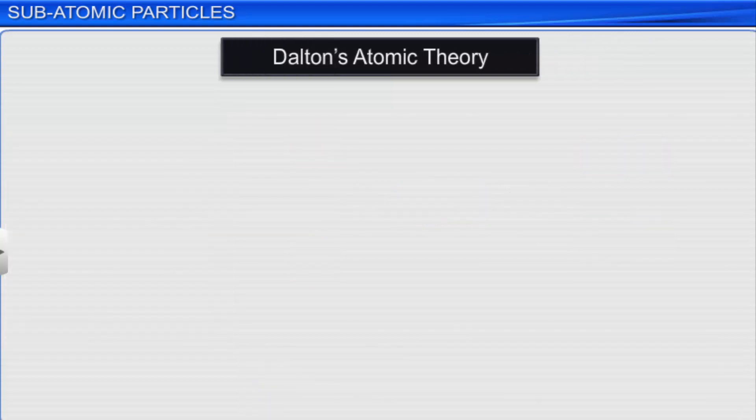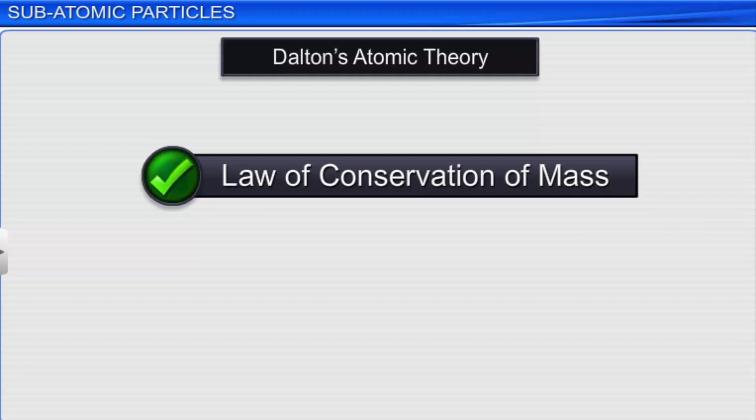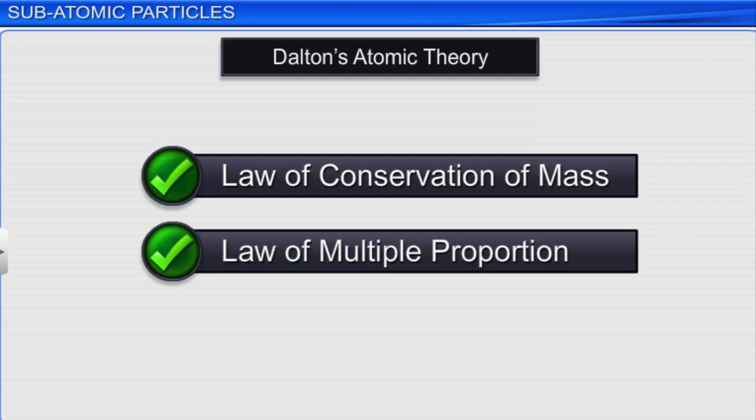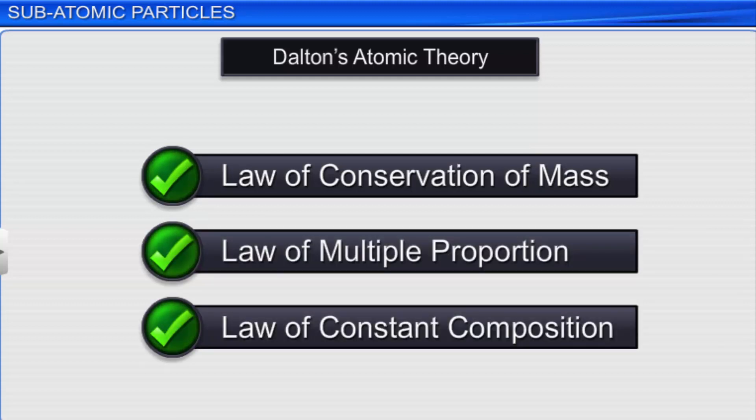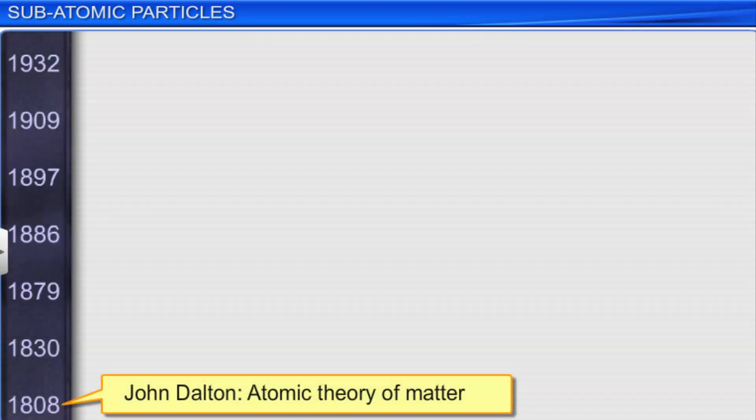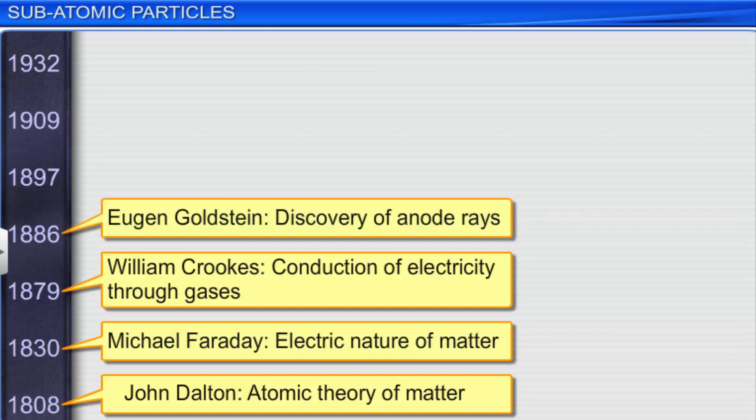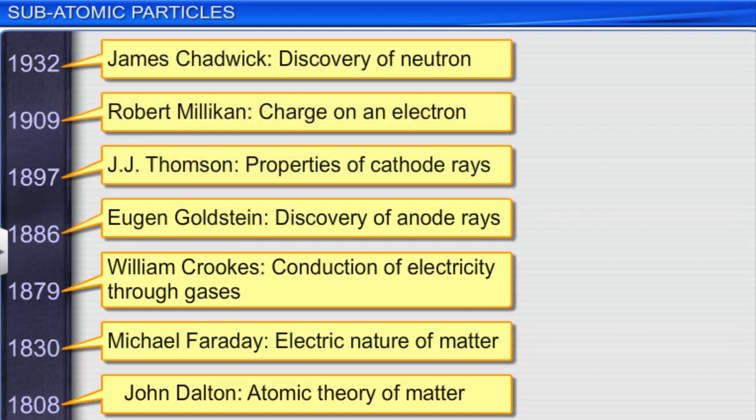Dalton's atomic theory was able to explain the laws of conservation of mass, multiple proportion, and constant composition. However, it could not explain the results of many experiments conducted by scientists in the later part of the 19th century and 20th century.